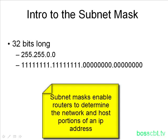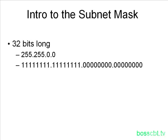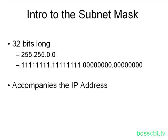Here are the basics on the subnet mask. It's 32 bits long — an IP address is 32 bits long as well. However, keep in mind a subnet mask is different. It's a separate number from the IP address itself, but it accompanies the IP address, so they come as a pair. The subnet mask can be expressed just like an IP address using dotted decimal notation or binary notation — you can use either one.